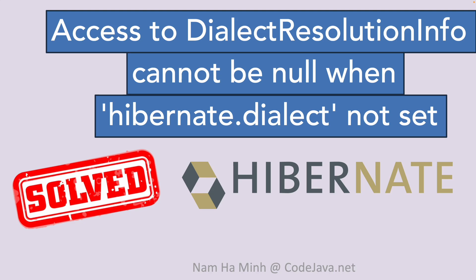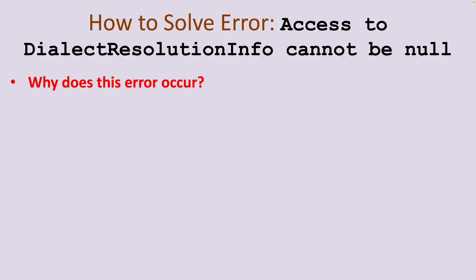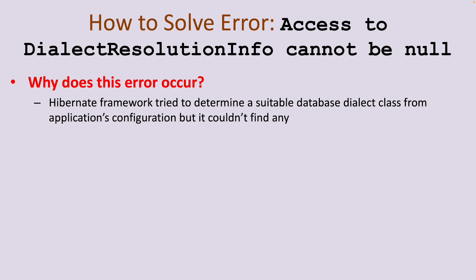Hello guys. In this video I'd like to share with you how to solve the error 'access to dialect resolution info cannot be null when hibernate.dialect not set' in Java development using the Hibernate framework. I am Nam Ha Minh at codejava.net. So why does this error occur? The error means that the Hibernate framework tried to determine a suitable database dialect class from the application's configuration but it couldn't find any.